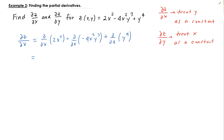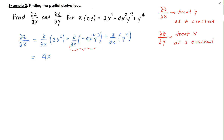For the first term, there's no Y in the 4X squared part by itself — wait, actually looking at the second term: 4X squared times Y cubed. We're going to treat Y cubed as a constant, then take the derivative of minus 4X squared with respect to X. Using the power rule, bringing down the two, that gives us minus 8X times Y cubed.